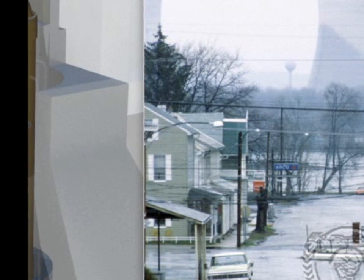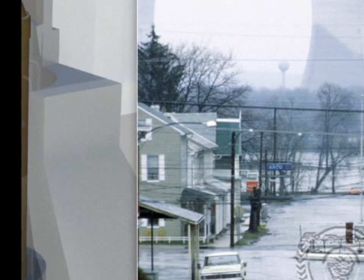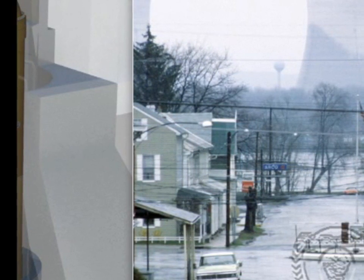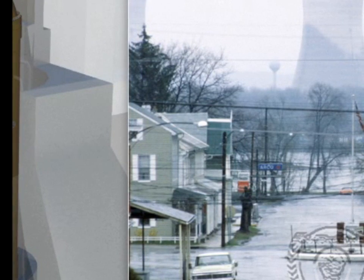In 1979, the cooling system failed at the Three Mile Island plant, causing a partial meltdown of the reactor core. The reactor vessel was not breached.